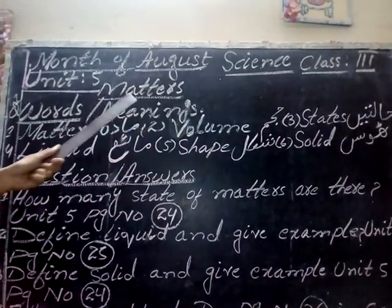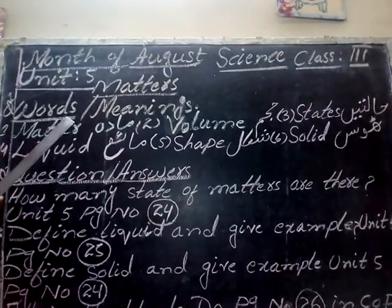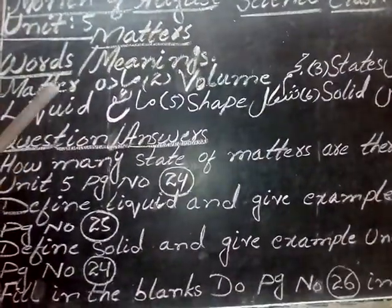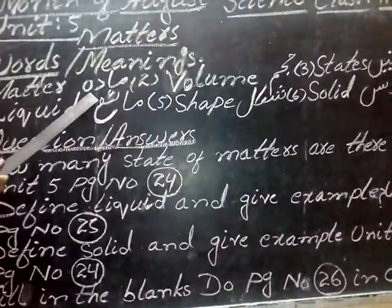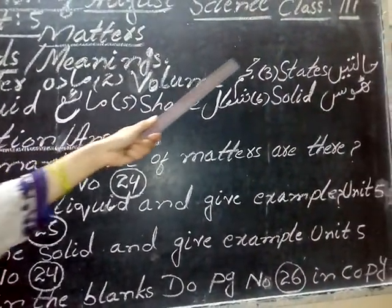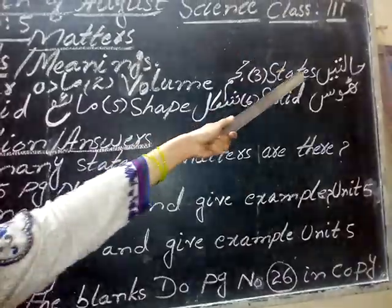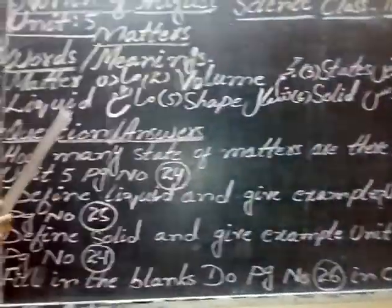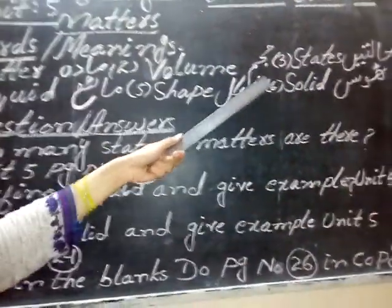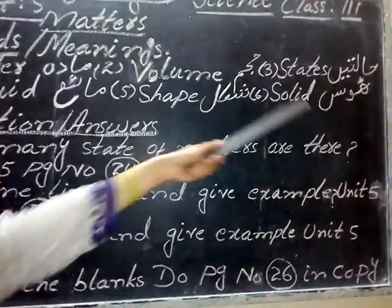Unit 5: Matters. Question number 1 — verse meaning: Matter — Madda, Volume — Mujum, States — Halte, Liquid — Maya, Shape — Shackal, Solid — Thoth.